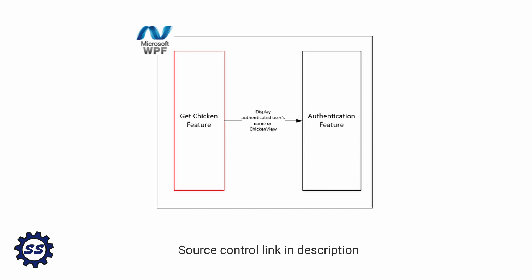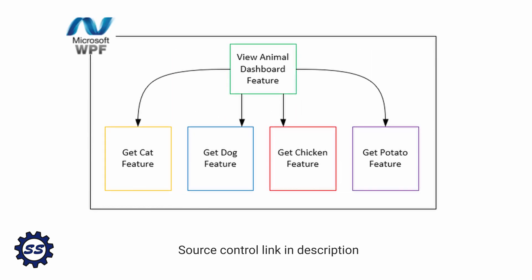For example, authentication could be a feature, but it could also be used in many other features. I'm worried about feature sharing because I don't want some kind of feature spaghetti where all the features reference each other. And maybe even things outside of authentication — what if you had some kind of dashboard UI that could also reference many other features as well.